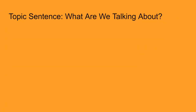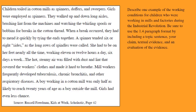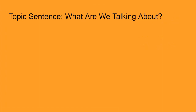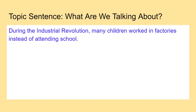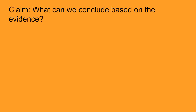For the topic sentence, what are we talking about? If you look back at your question, it tells you we're talking about children and the Industrial Revolution. So we need to add those pieces to our topic sentence. I have it written right here. It says: during the Industrial Revolution — that's my time period — many children — that's who we're talking about — worked in factories instead of attending school. I know the time period, and I know the population of people we're talking about. So now that we have a topic sentence, we need to come up with the claim.